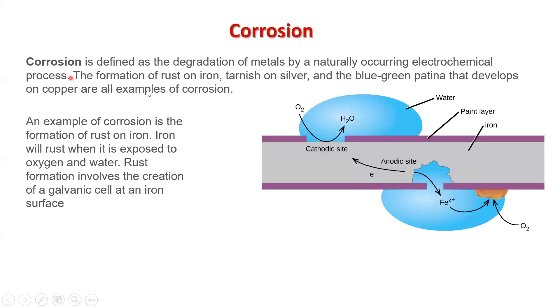So to give you an example, here we have some iron and typically iron is coated with something so that it can't rust. Maybe it's painted with a layer of paint that enables the iron to not be exposed to oxygen and water. But if some of that paint is chipped away...